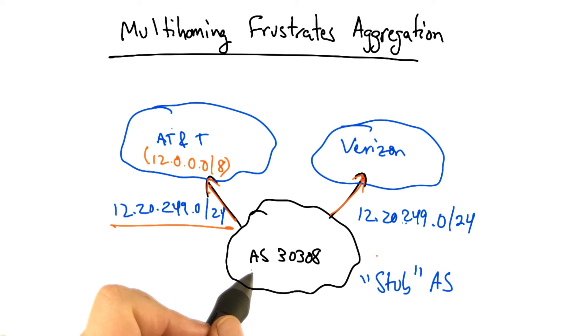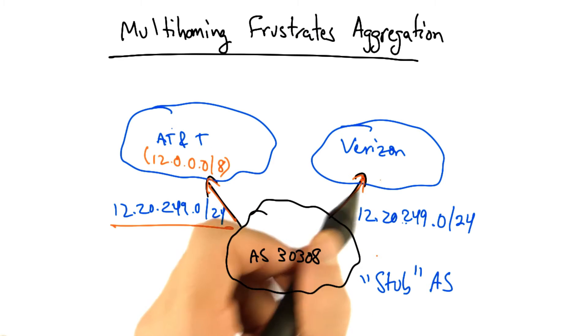To be reachable by both of these ISPs, AS30308 has to advertise its prefix, which it received from AT&T, via both AT&T and Verizon.